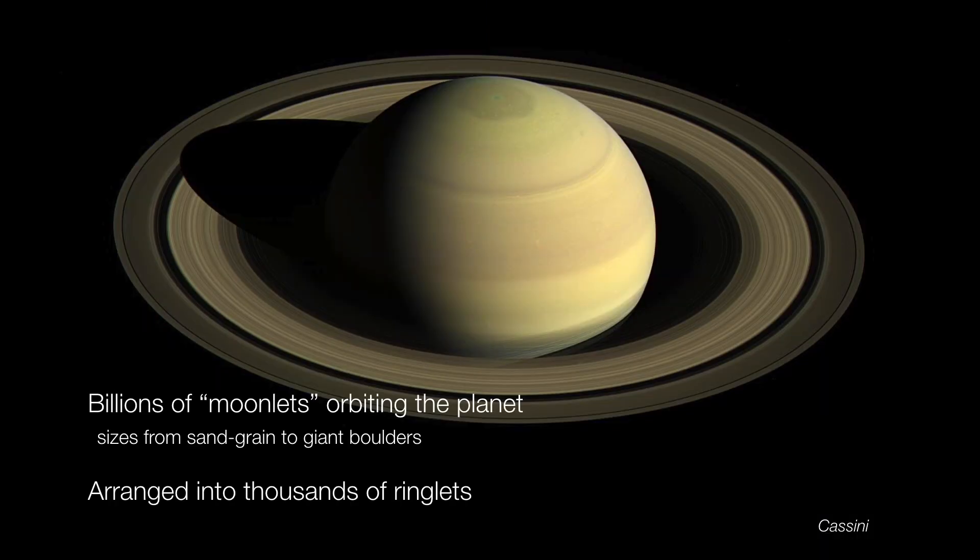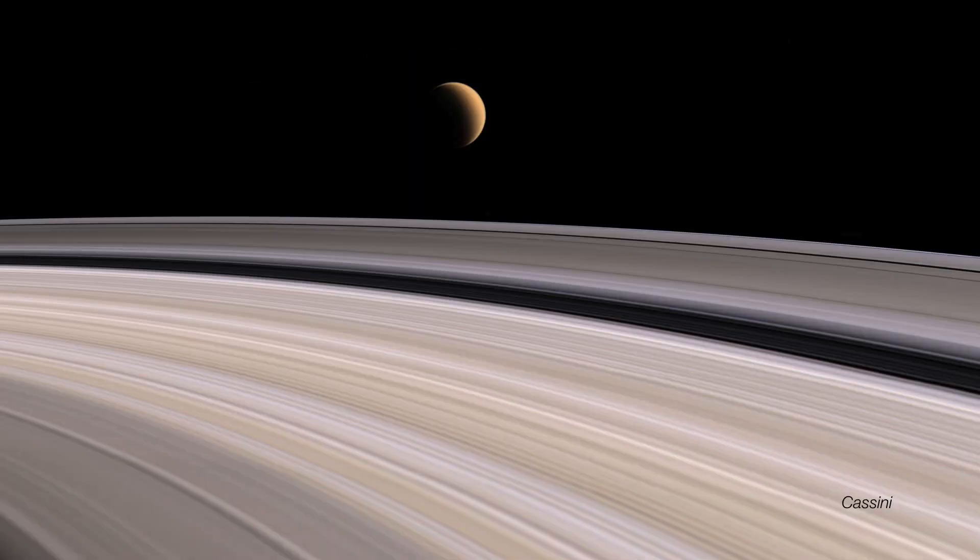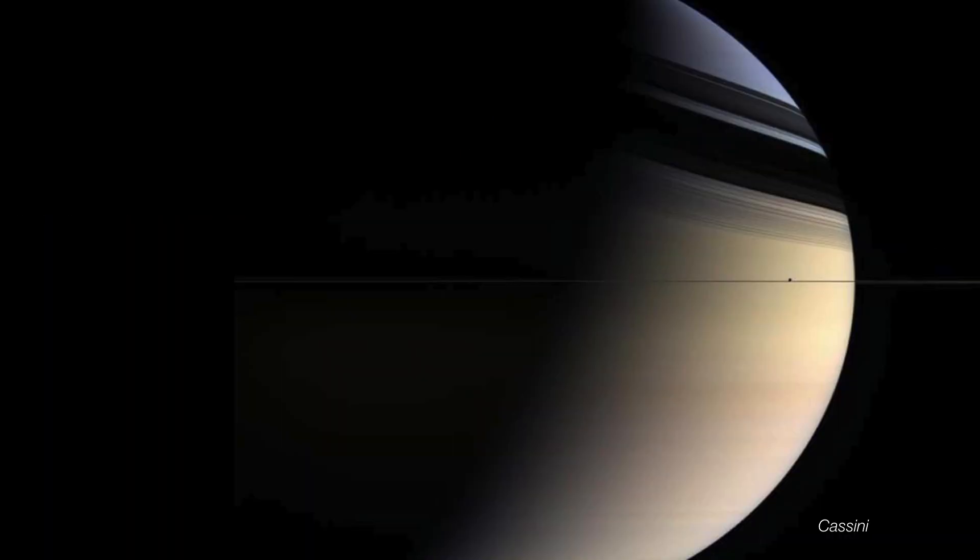Today, we know that Saturn is composed of not one or three, but rather thousands of ringlets. And the rings themselves are not even continuous solid structures, but rather they're composed of billions of tiny particles or moonlets. And they range in size from grains of sand all the way up to giant boulders. But while Saturn's rings are wide and expansive and extremely broad, the rings themselves are remarkably thin.